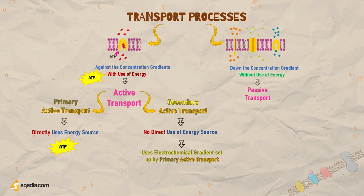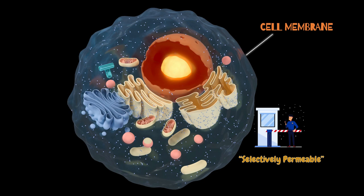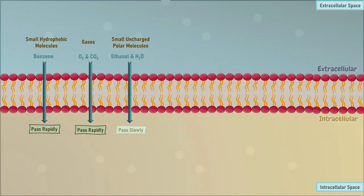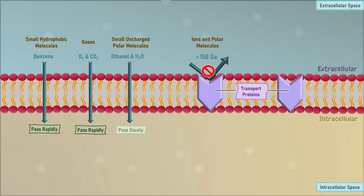The cell membrane is a selectively permeable membrane, meaning it only allows certain substances to pass through it. For example, ions and polar molecules larger than about 150 daltons cannot diffuse through the membrane. Therefore, molecules that cannot cross the membrane on their own require specific transmembrane proteins, such as membrane transport proteins.